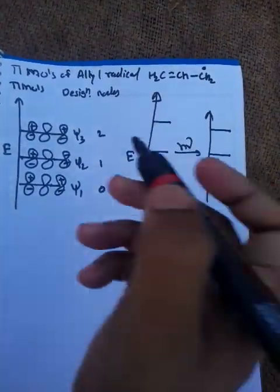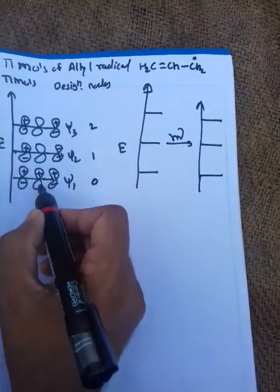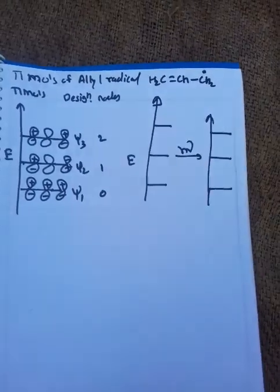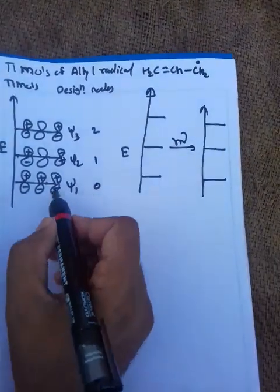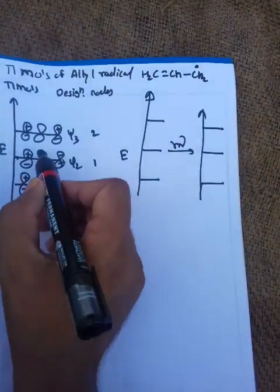So in the first, psi 1, all have the same sign, so we have zero nodes.